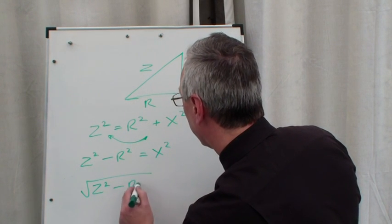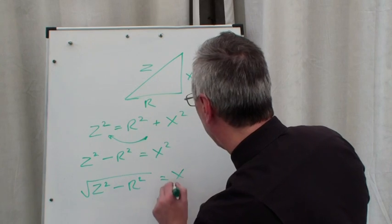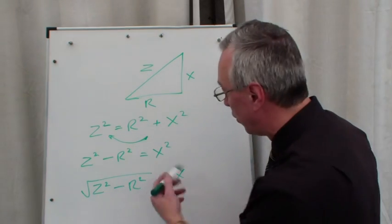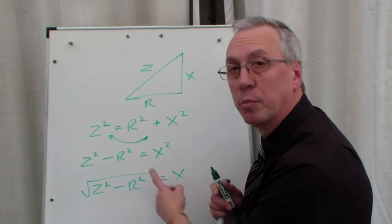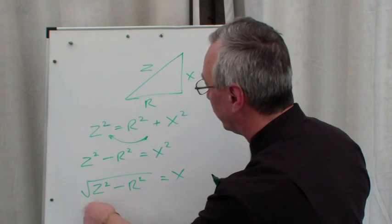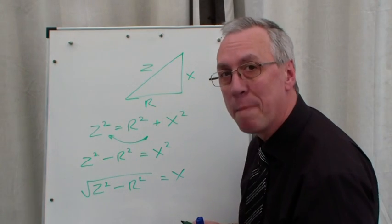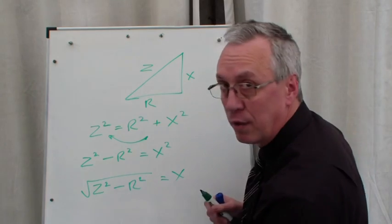We would want to turn that around and express the subject on the left: x = √(z² - r²). See how this is working?